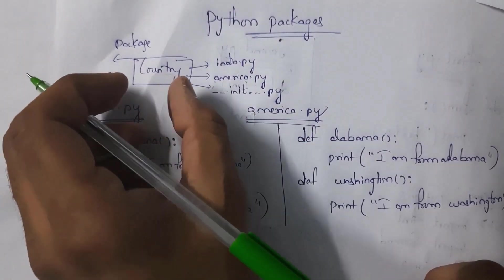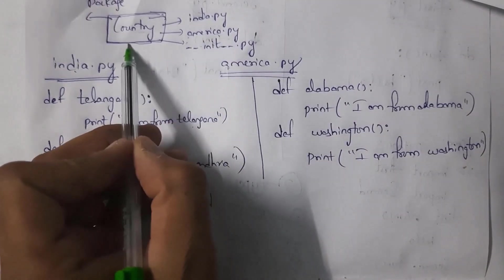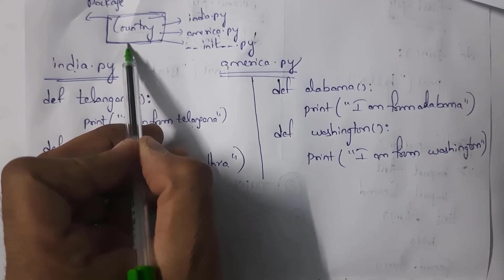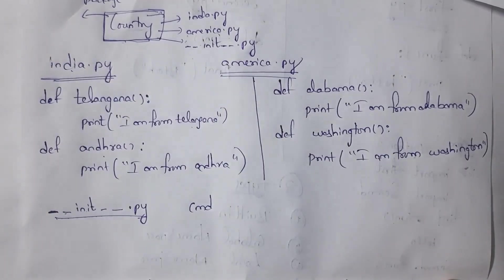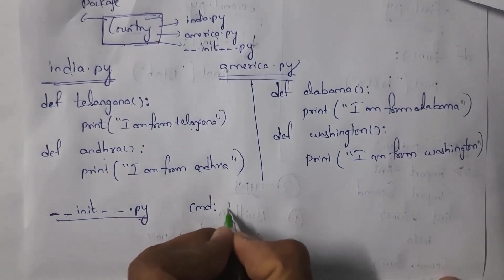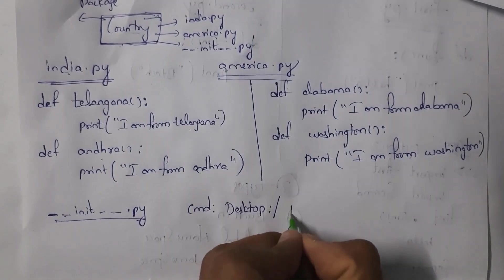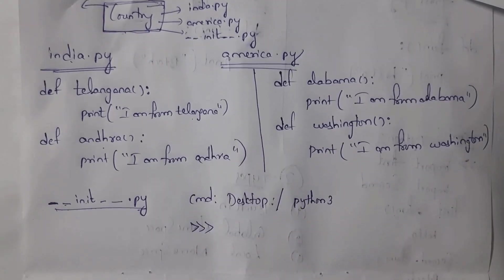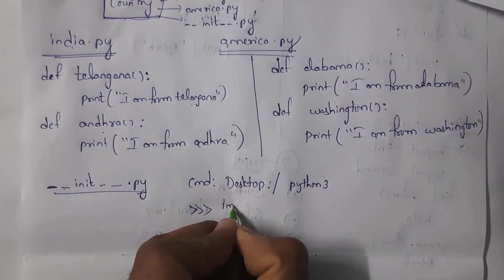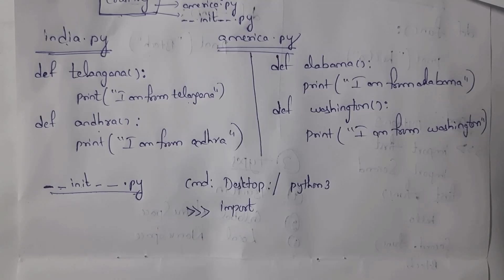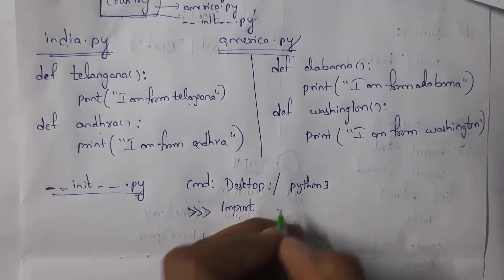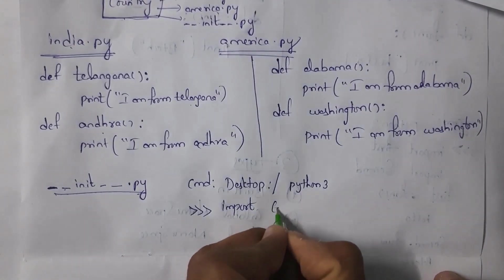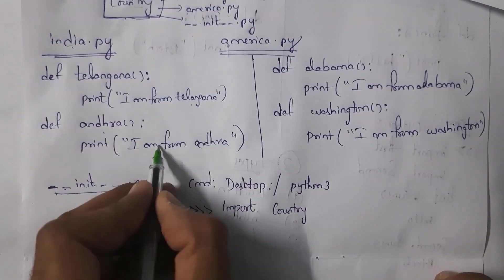If this package 'country' is present on the desktop, you need to open the command prompt at the desktop location. Type 'python3' to enter the interpreter. Using the import keyword, you can import a package or module. To import the package, write: import country.